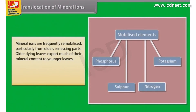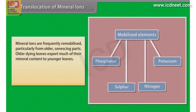Fruits and seeds, and the storage organs. Mineral ions are frequently remobilized, particularly from older senescing parts. Older dying leaves export much of their mineral content to younger leaves. Similarly, before leaf fall in deciduous plants, minerals are removed to other parts.